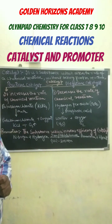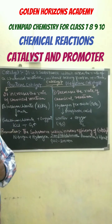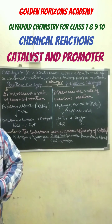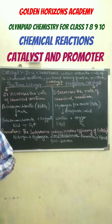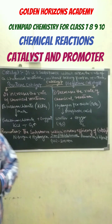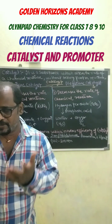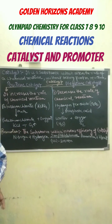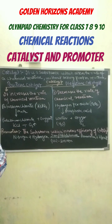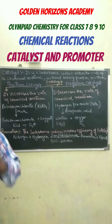Now, a catalyst may increase the rate of reaction or it may decrease the rate of reaction. Those catalysts which increase the rate of reactions are called positive catalysts, and those catalysts which decrease the rate of reaction are called negative catalysts.